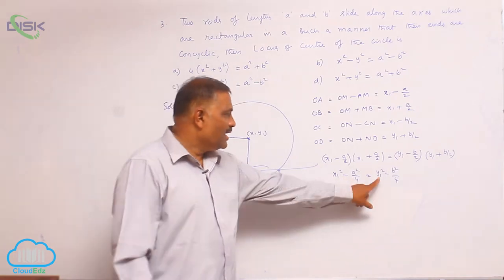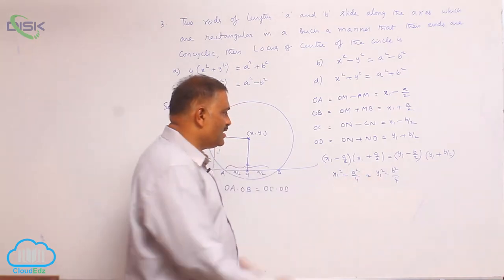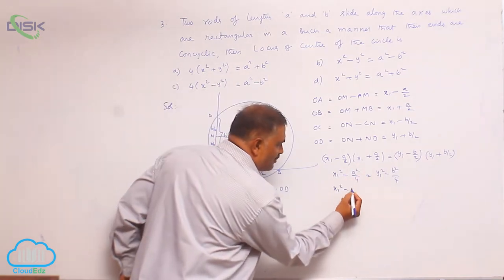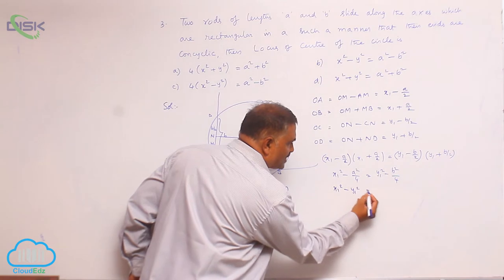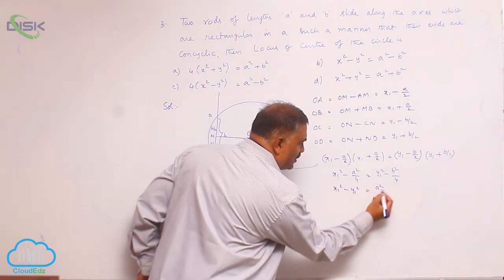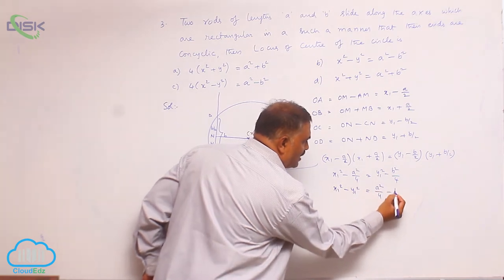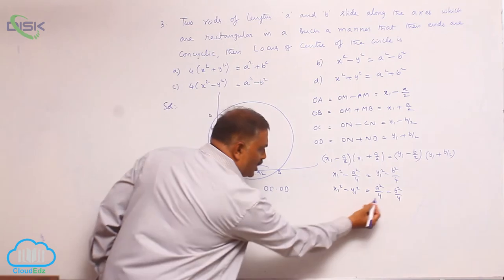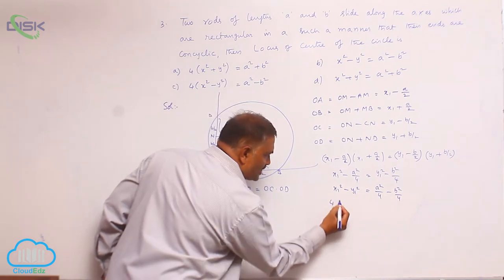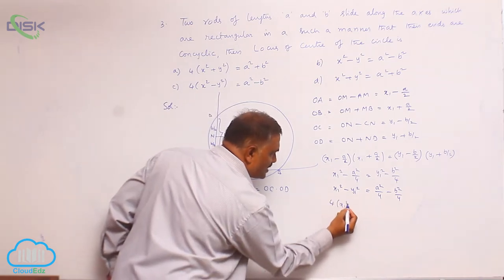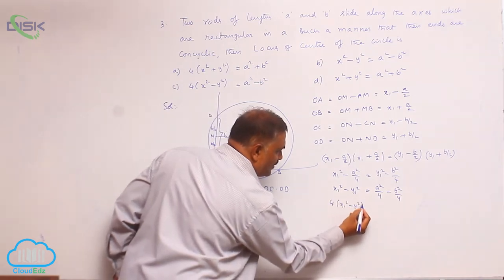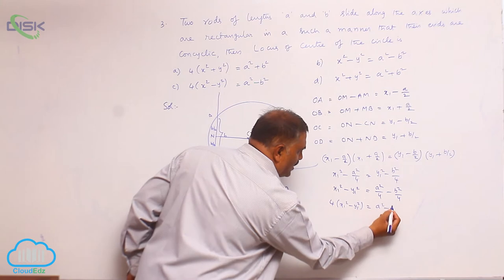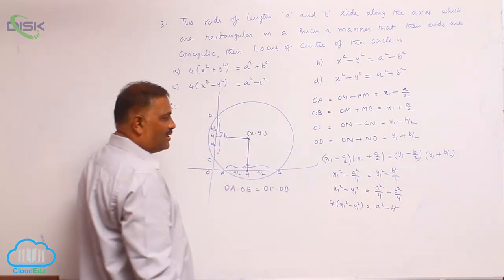You can see that you can exchange the terms: x1 square minus y1 square equal to a square by 4 minus b square by 4. Now, by cross multiplication, 4 x1 square minus y1 square equal to a square minus b square.